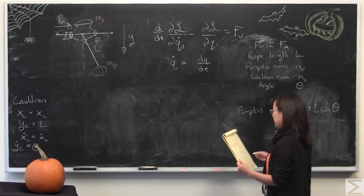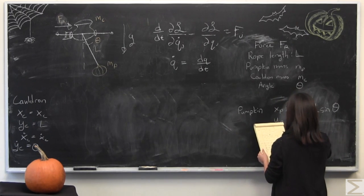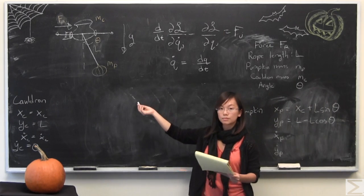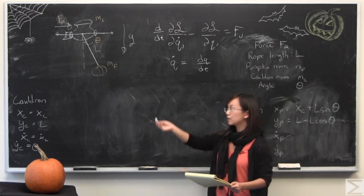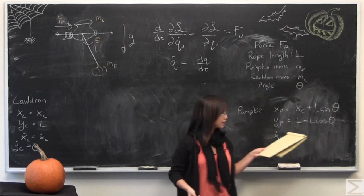We're going to do a similar process for the y-coordinate. It's a little simpler, it does not depend on where the cauldron is. I defined the bottom of that pendulum swing to be zero height, so that would mean L minus L cosine theta. That would give us the y position.